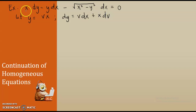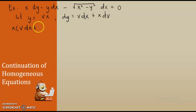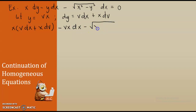Then let us change your y and your dy. We have now x times dy, which is v·dx plus x·dv, minus y which is vx, times vx·dx, minus the square root of x squared minus v squared x squared, dx, equal to 0.